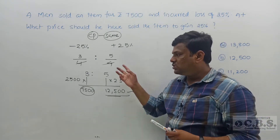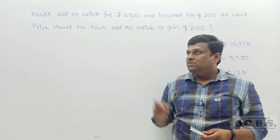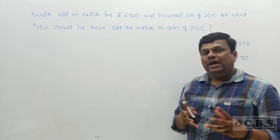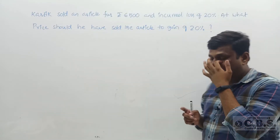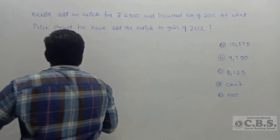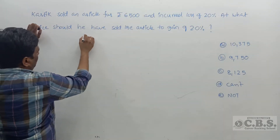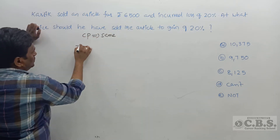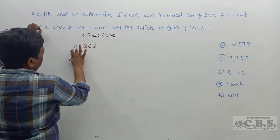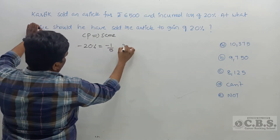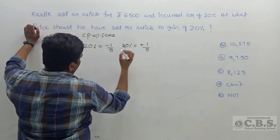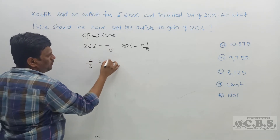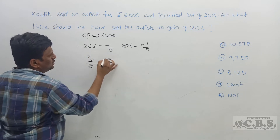Since cost price is the same, we used the fraction and ratio concept to answer in just one line. Next question: an article is sold for 6,500 rupees at a loss of 20%. At what price should it have been sold to gain 20%? Cost price is the same, so we use the same approach. 20% loss means minus 1 by 5, so cost price is 5 parts, selling price is 4 parts. 20% profit means plus 1 by 5, so selling price is 6 parts.